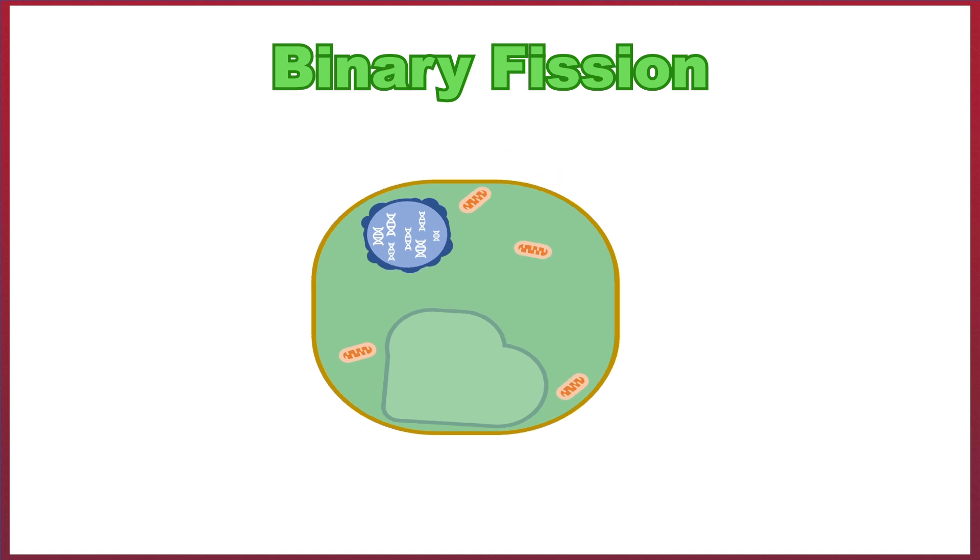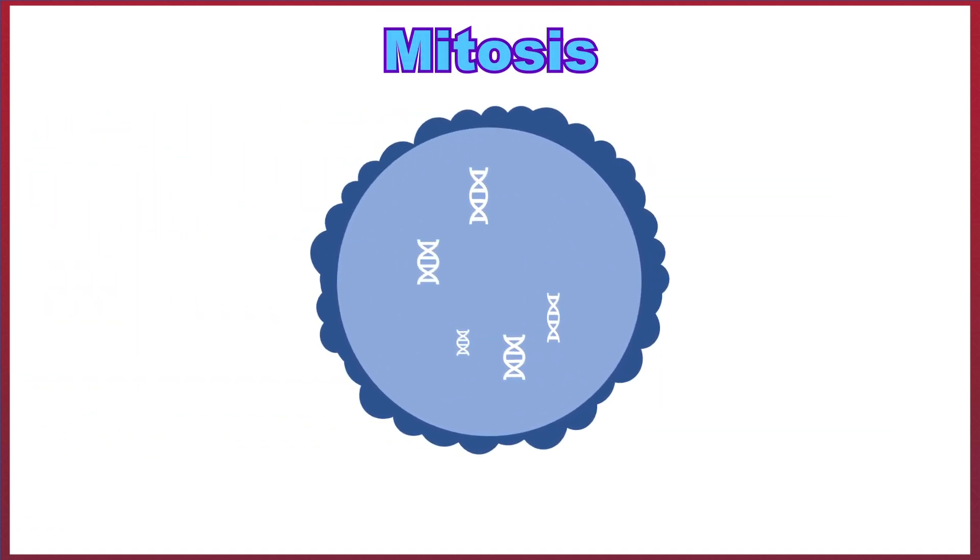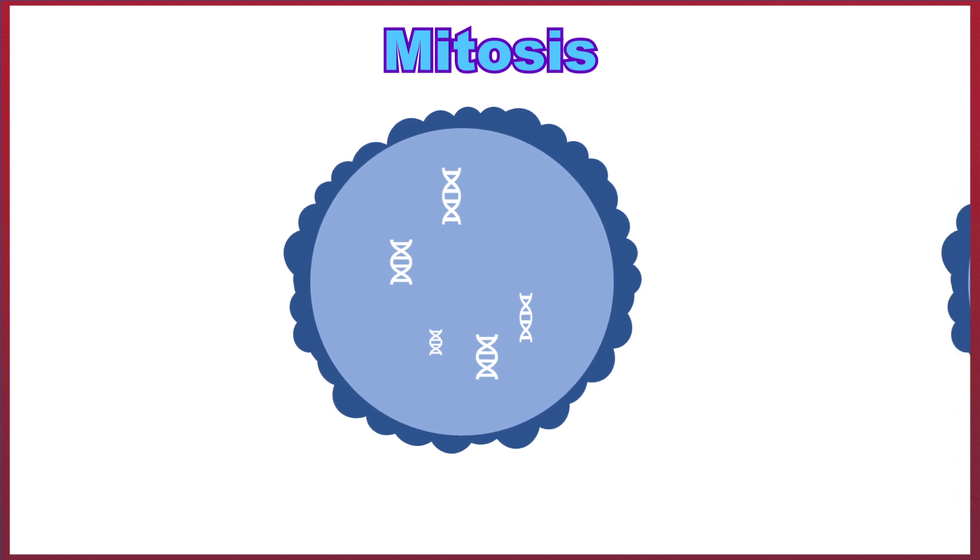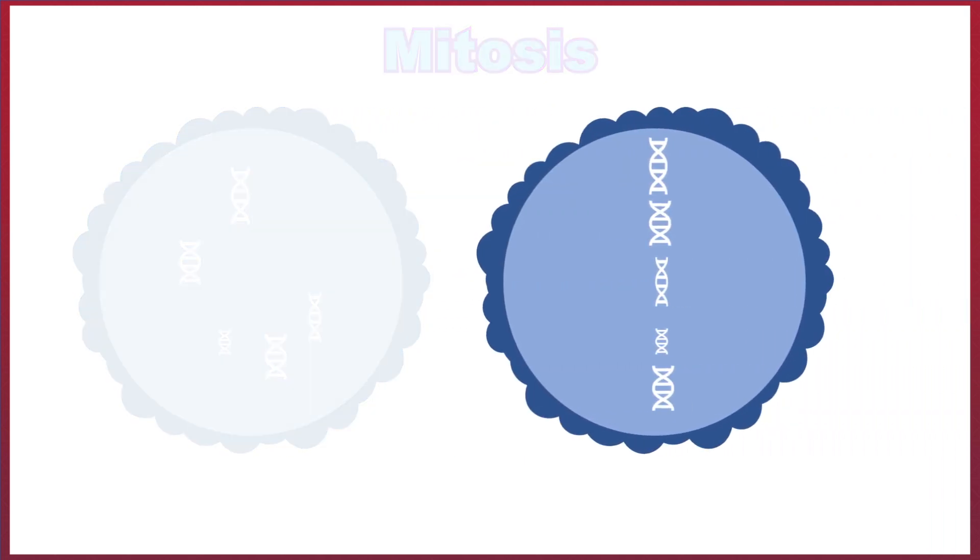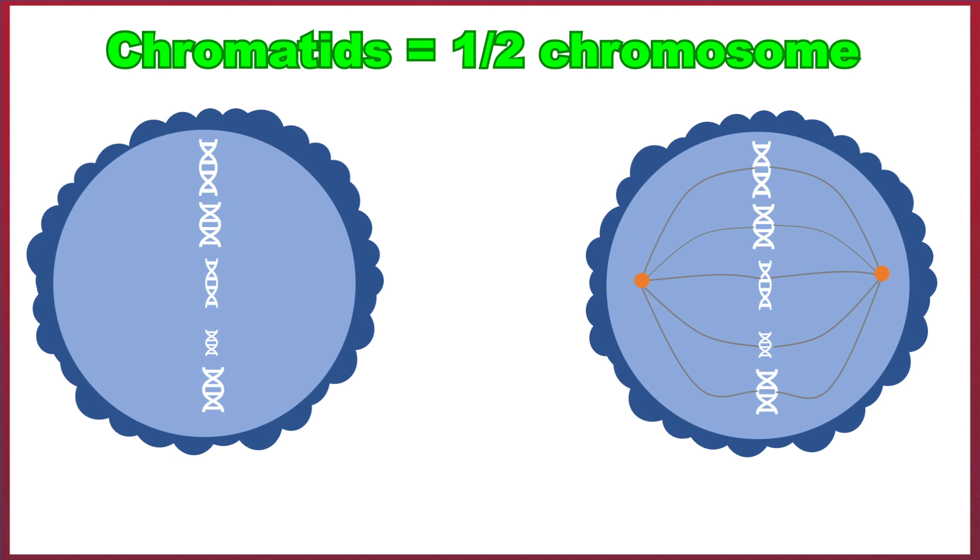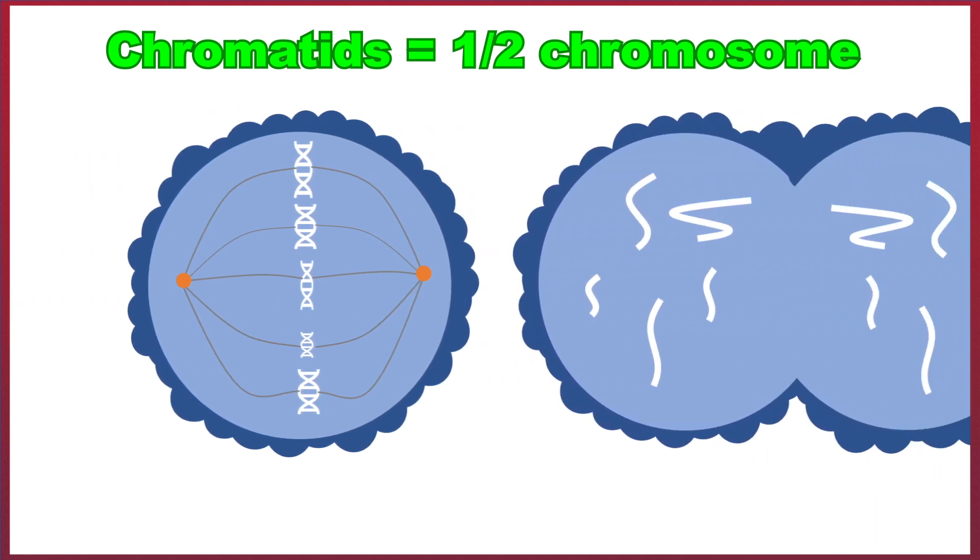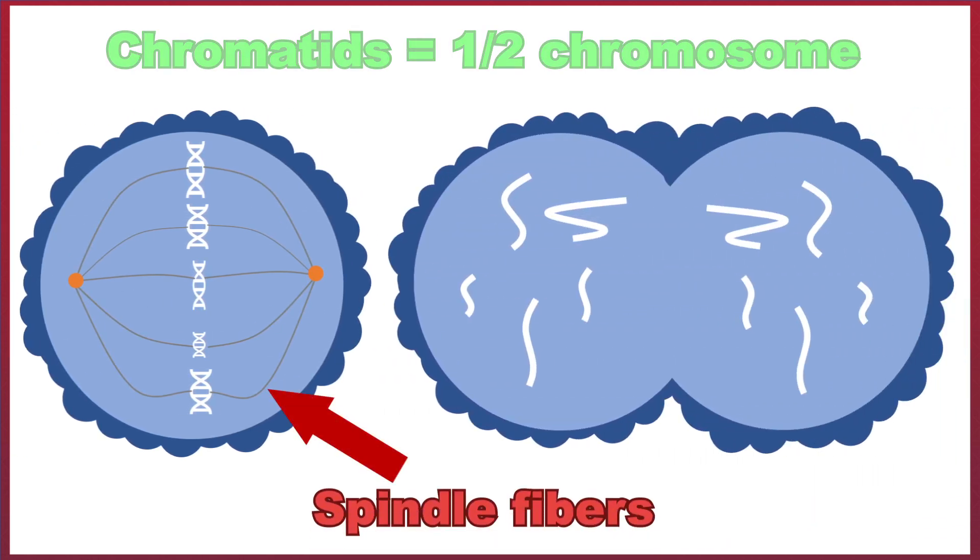However, unlike with budding, the new cell isn't formed as a bud. Instead, the nucleus splits by mitosis. During this, the chromosomes in the nucleus split apart into two sets of chromatids, which are then pulled apart into two new nuclei by spindle fibers. Following this, the cell elongates as the cytoplasm divides into two.